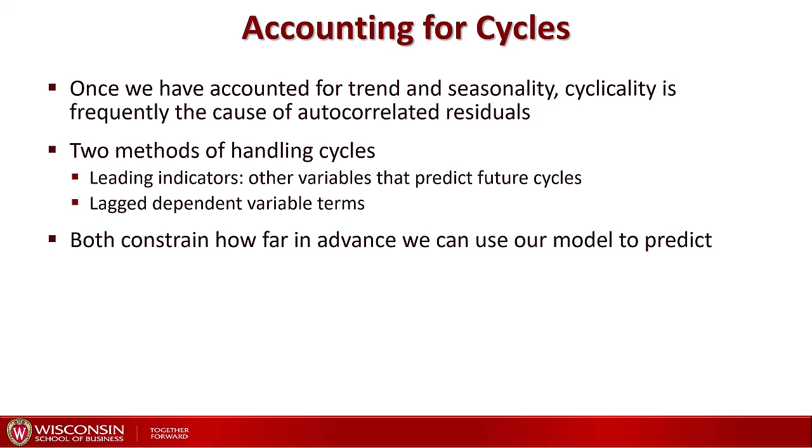A leading indicator is an explanatory variable that changes before the cycle changes. It allows us to predict that the cycle is about to change, and therefore it can be incorporated in the model. The challenge with leading indicators is that they are incredibly difficult to find, because they are basically variables that move before the cycle changes in our dependent variable. It isn't easy when cycles are caused mostly by macroeconomic indicators that tend to move together, such as GDP, unemployment, or inflation.